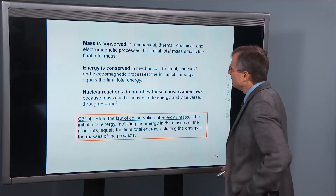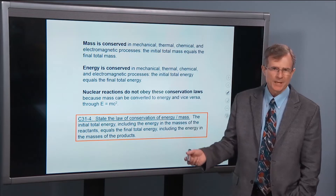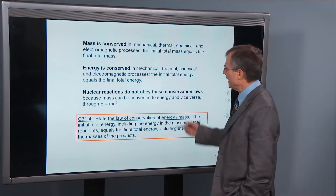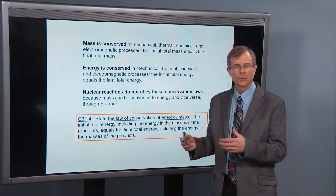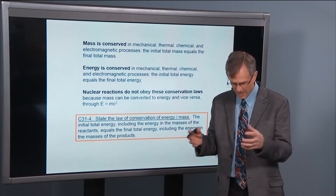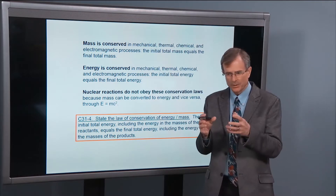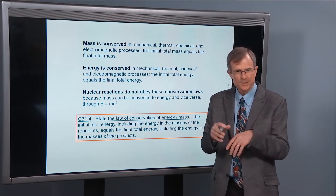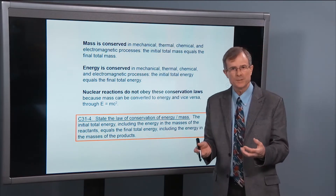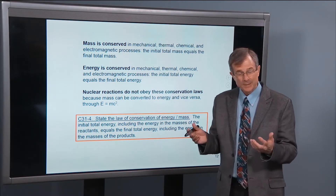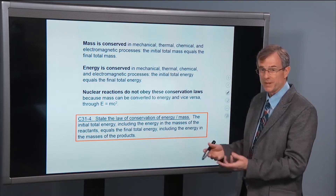So what do we mean? We've talked about mass conservation and energy conservation. Mass conservation means that the initial mass equals the final total mass. If you add up all the masses of the objects, whatever the mass is to start with is going to be its mass at the end. If you break it into two pieces, the masses are going to be the same — you're not going to lose or gain any mass.